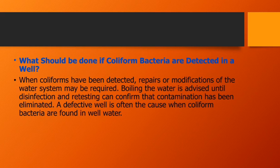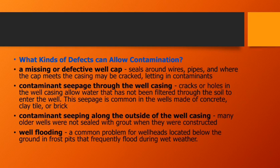Defects are often the cause when coliform bacteria are found in well water. These defects include defective well caps, where sealing around the wires, pipes, and where the cap meets the casing can be cracked, letting in contaminants. Contaminants can also seep through cracks or holes in the well casing. This seepage is common in wells made of concrete, clay tile, or brick.